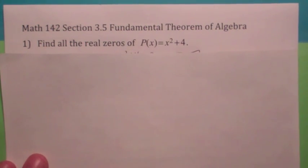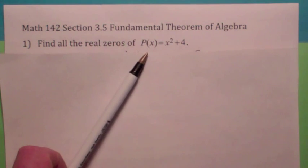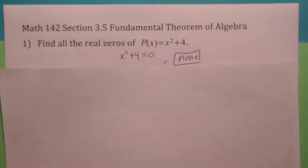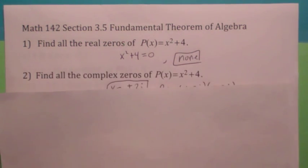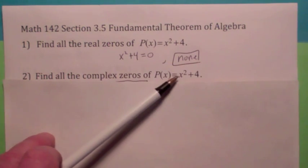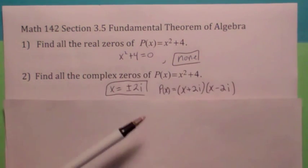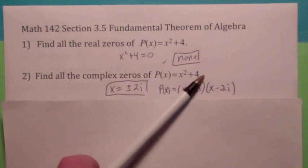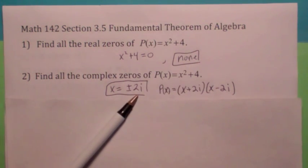Let's start off by looking at this. Find all the real zeros of this quadratic polynomial function. The answer is, it doesn't have any. What if you wanted to find all the complex zeros of this polynomial function? It turns out it has two. If you solve this equation equaling zero, you get x equal plus or minus 2i.